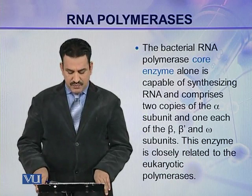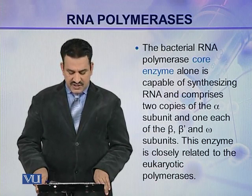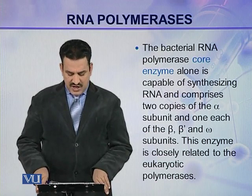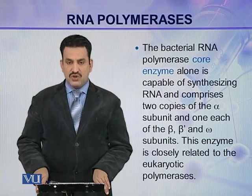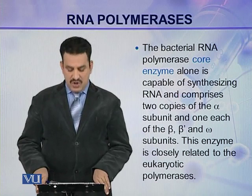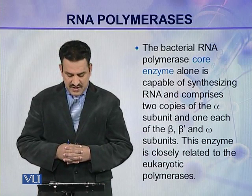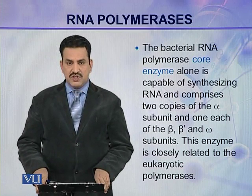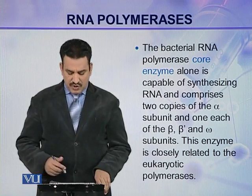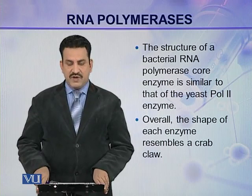The bacterial RNA polymerase core enzyme alone is capable of synthesizing RNA and comprises 2 copies of alpha subunits, and 1 each of beta and beta prime, and 1 unit of omega. So there are 5 subunits: 2 alpha, beta, beta prime, and omega. This enzyme is closely related to the eukaryotic RNA polymerases.